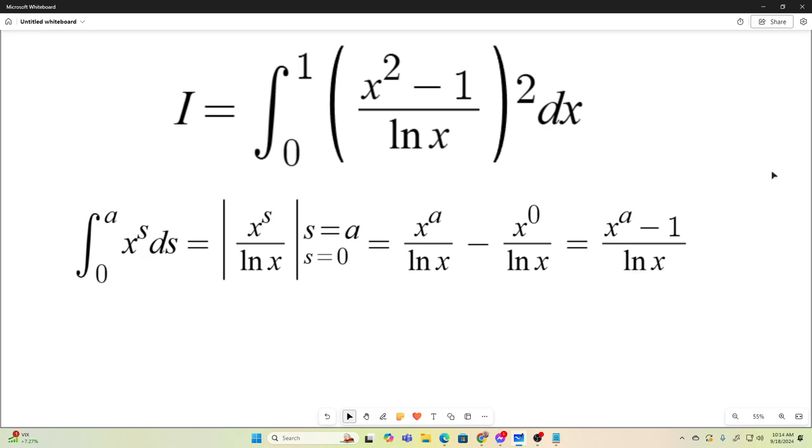Okay, well, that means that x squared minus 1, just replacing our a with a 2, that means x squared minus 1 over natural log x is the integral from 0 to 2 of x to the s ds. But it's also equal to the integral from 0 to 2 of x to the t dt.